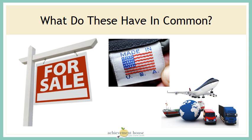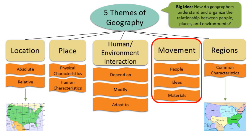What do these things have in common? A for sale sign, a clothing label, and various forms of transportation. They all have to do with our next theme of geography, which is movement.